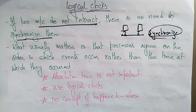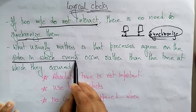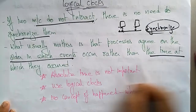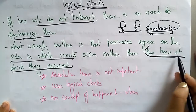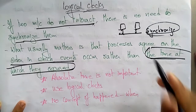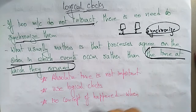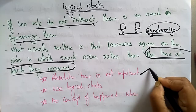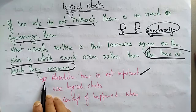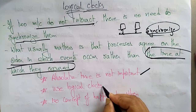From this you can clearly understand that logical clocks only depend on the order of events — they don't bother about the time at which events occur. Logical clocks mainly concentrate on the order of events rather than the time at which they occur. Absolute time is not important in logical clocks.